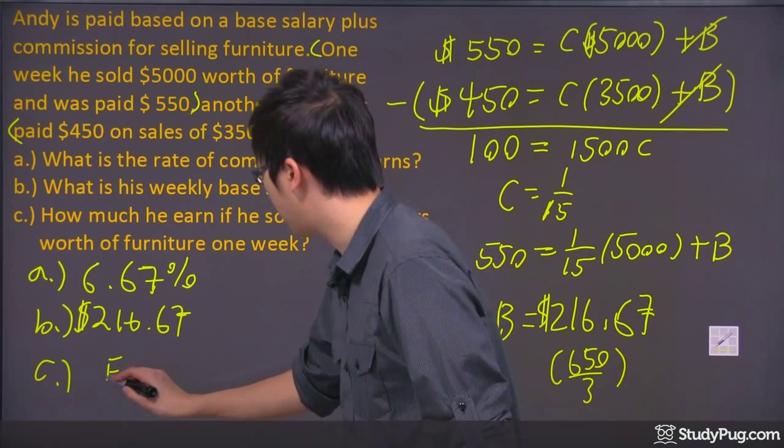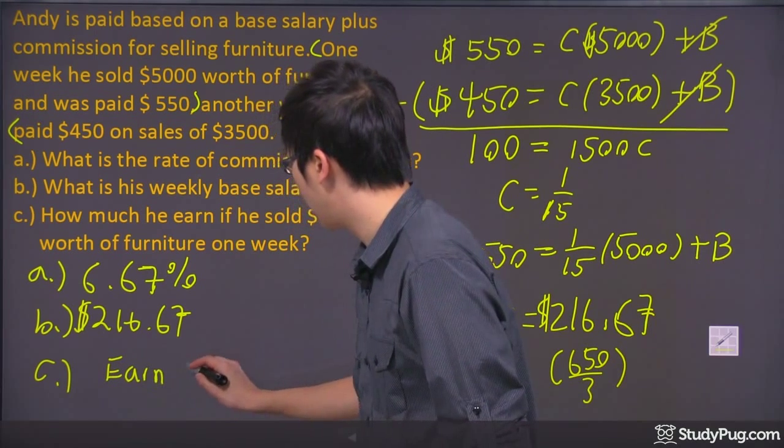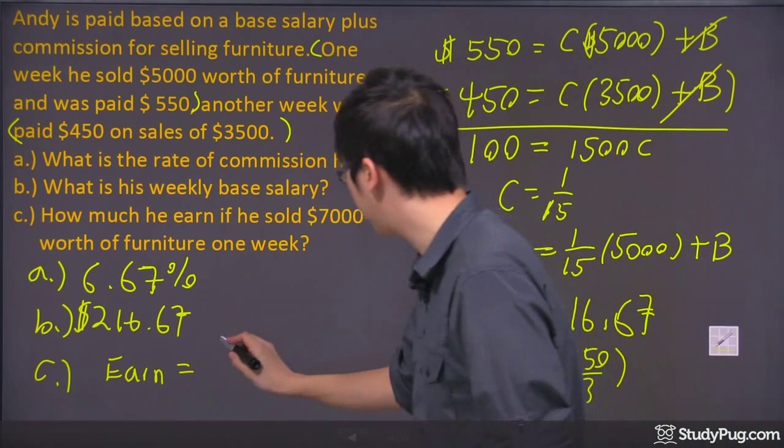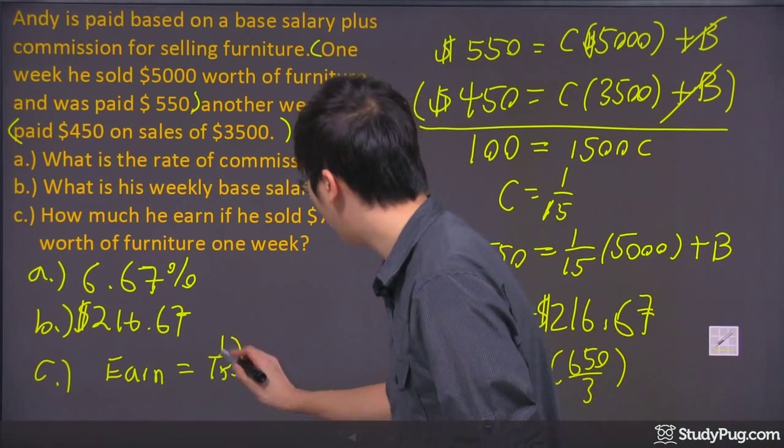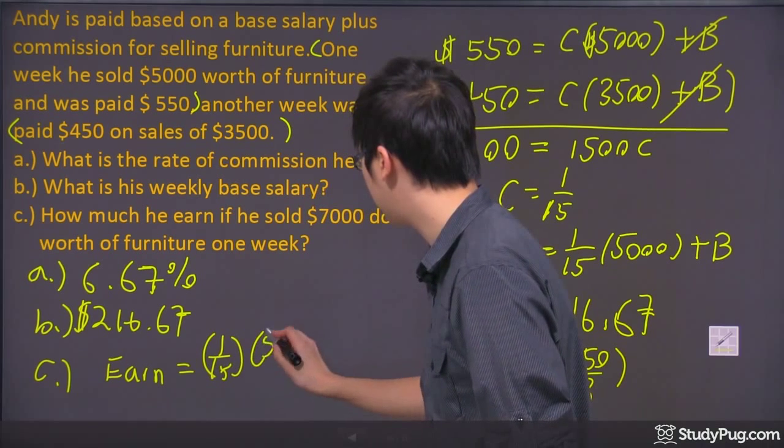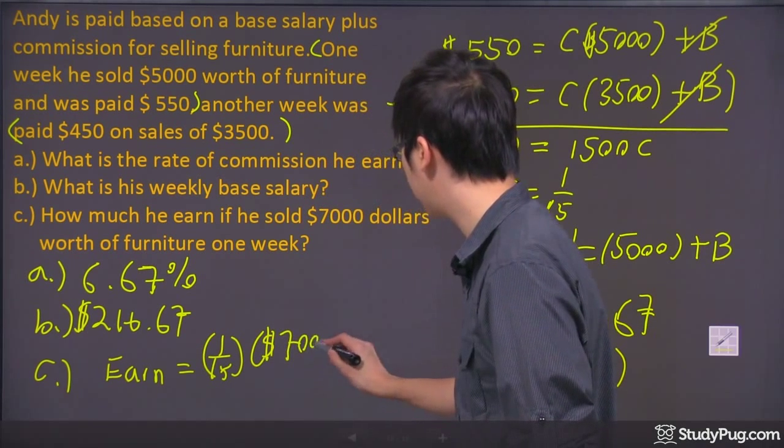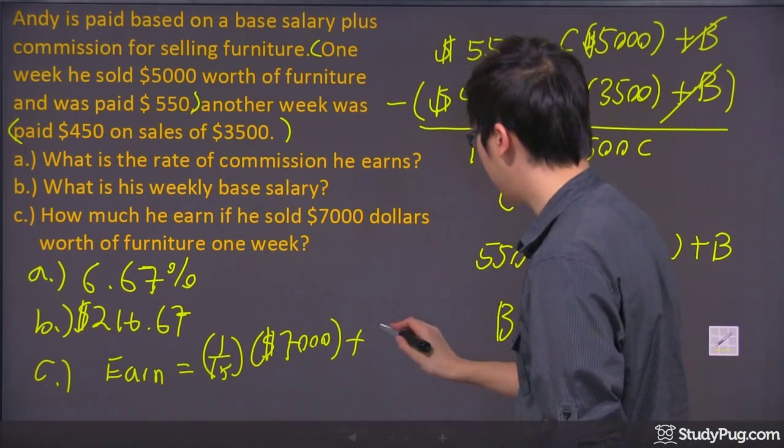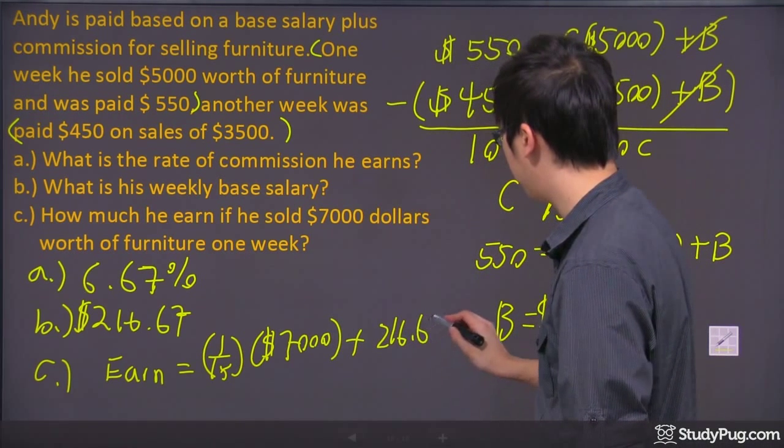I'm going to put an earn right here, and I'm going to make that equal to the commission rate, which is 1/15th of my $7,000 worth of furniture that I've sold, and I'm going to plus my base salary, which is the $216.67.